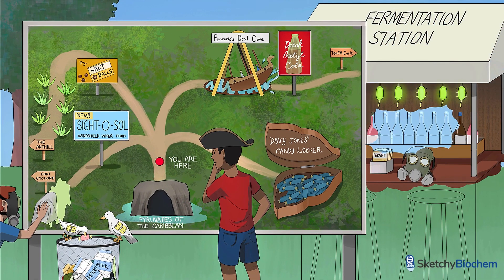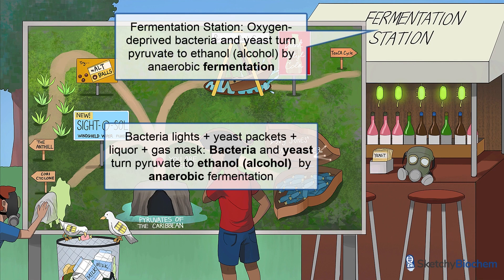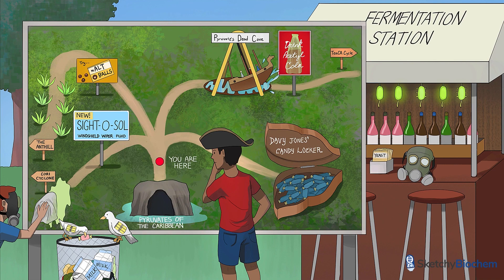So far we've talked about all the places where our beloved pyruvate kid can go. But hold on — we made a mistake. There's one place he can't go, not because he's pyruvate, but because he's not 21, a bacteria, nor a yeast. Welcome to the Fermentation Station, where oxygen-deprived bacteria and yeast will turn pyruvate into cold, refreshing ethanol. It comes as no surprise that this is a popular spot among the adult chaperones. You'll be welcomed with fluorescent bacteria lights, yeast packets, and good times. We'll conclude this sketch by including a gas mask, because fermentation is an anaerobic process.